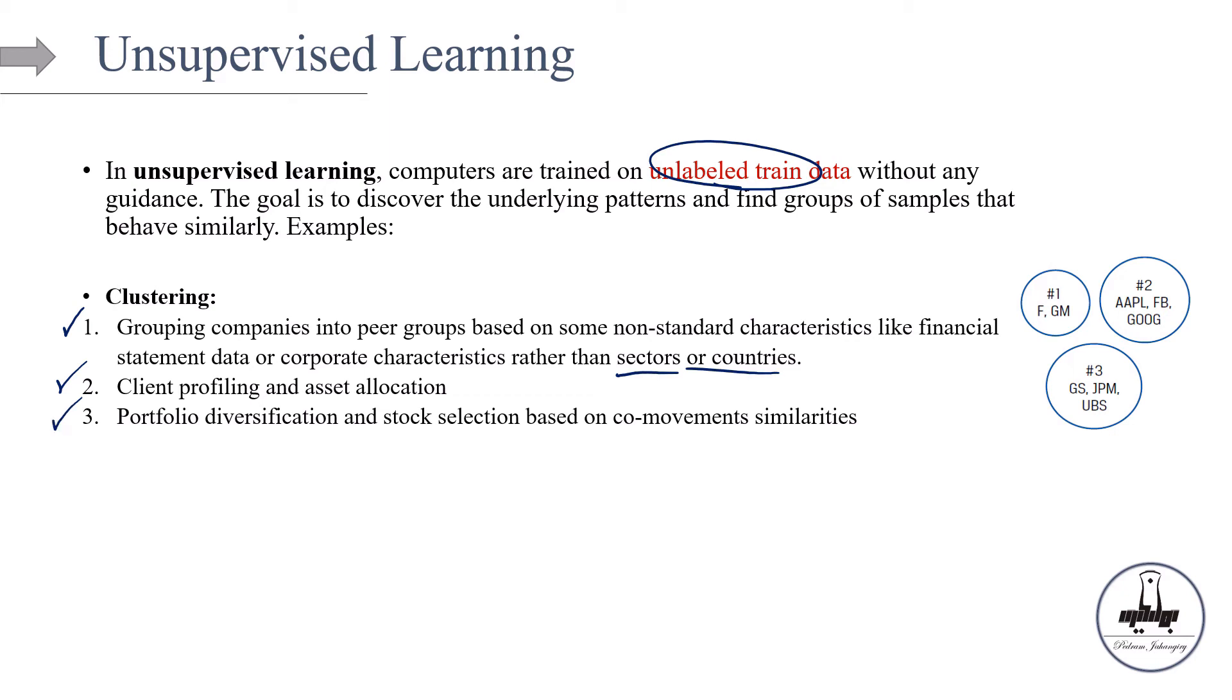And then finally, we can do portfolio diversification and stock selection based on co-movement similarities. Instead of looking at different sectors and finance in stock market, we want to say that, OK, maybe these companies we want to put them in the same group because they have co-movement. We can look at their correlation between in their returns. So for example, here's an example, we know that Ford GM maybe are in the same industry, Apple, Facebook, Google, again, in the same industry and Goldman Sachs, JP Morgan and UBS are in the banking industry.